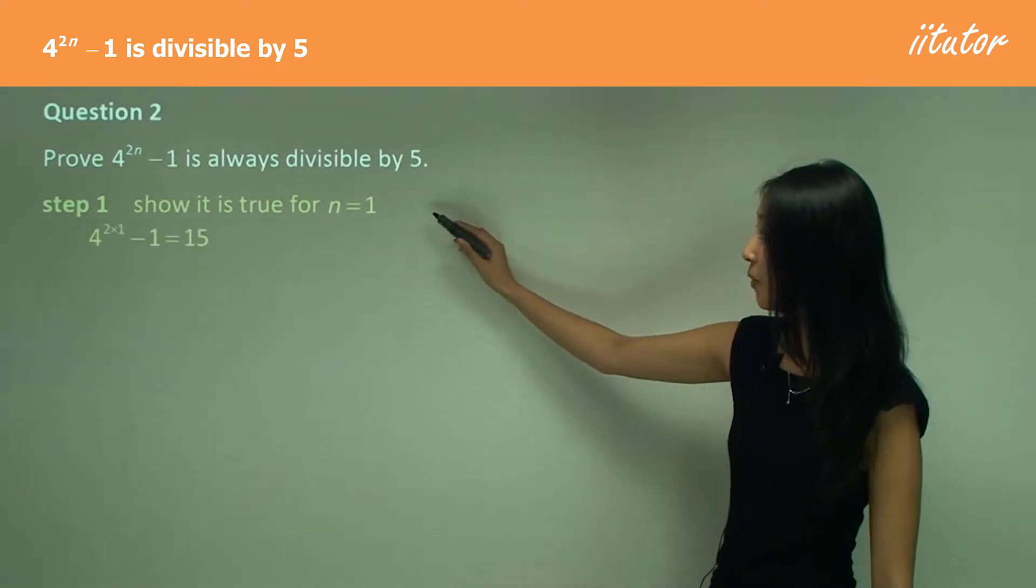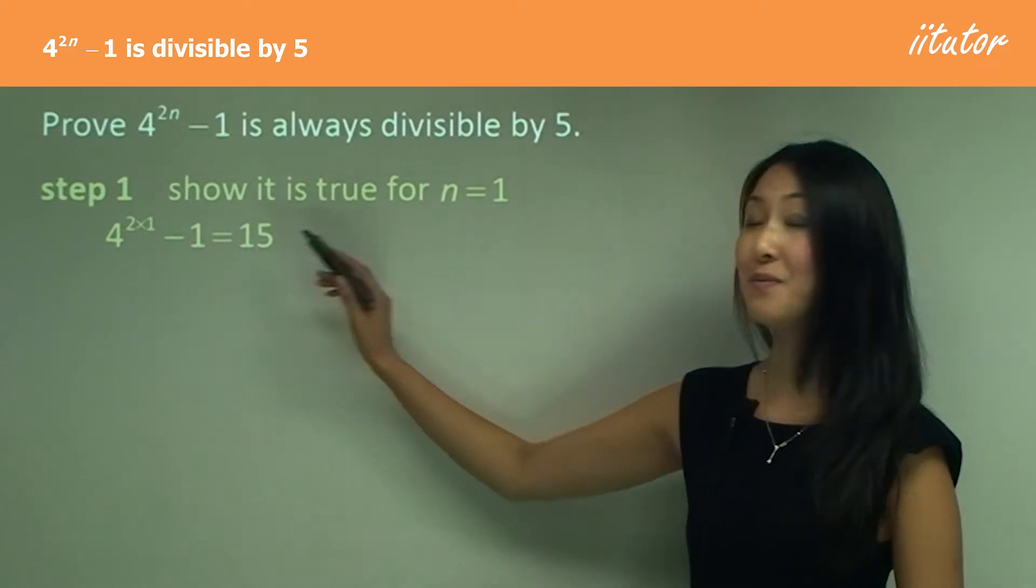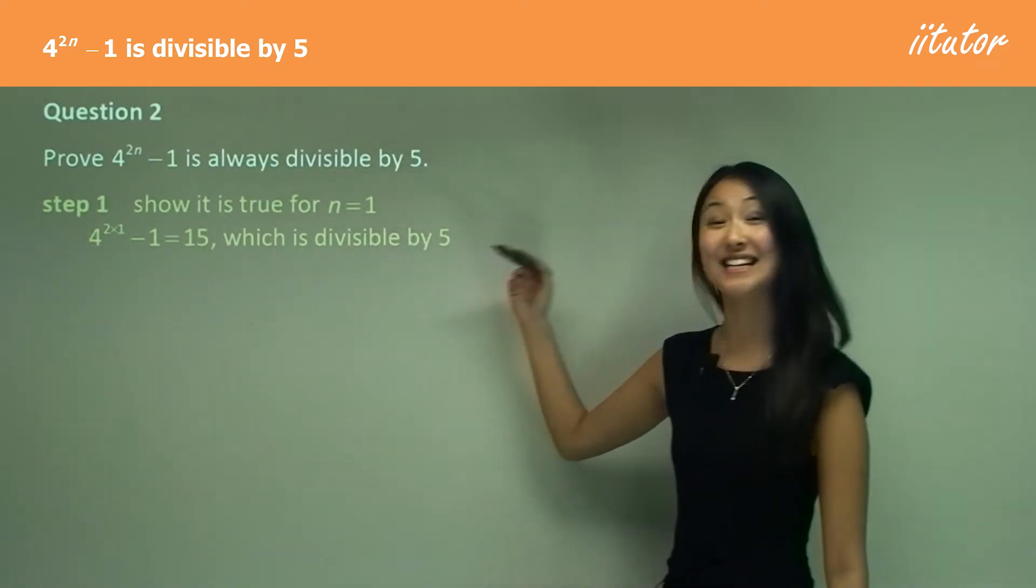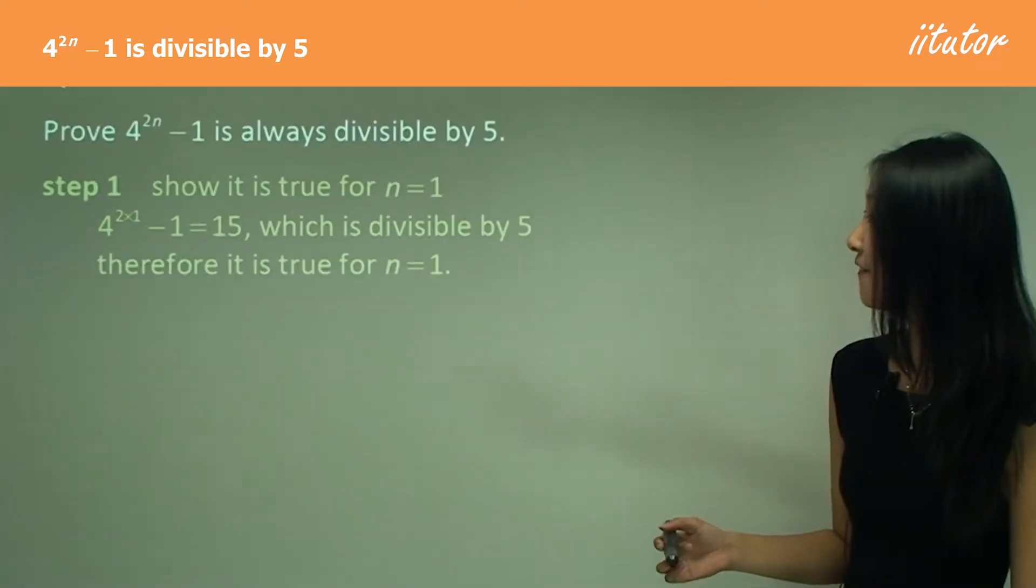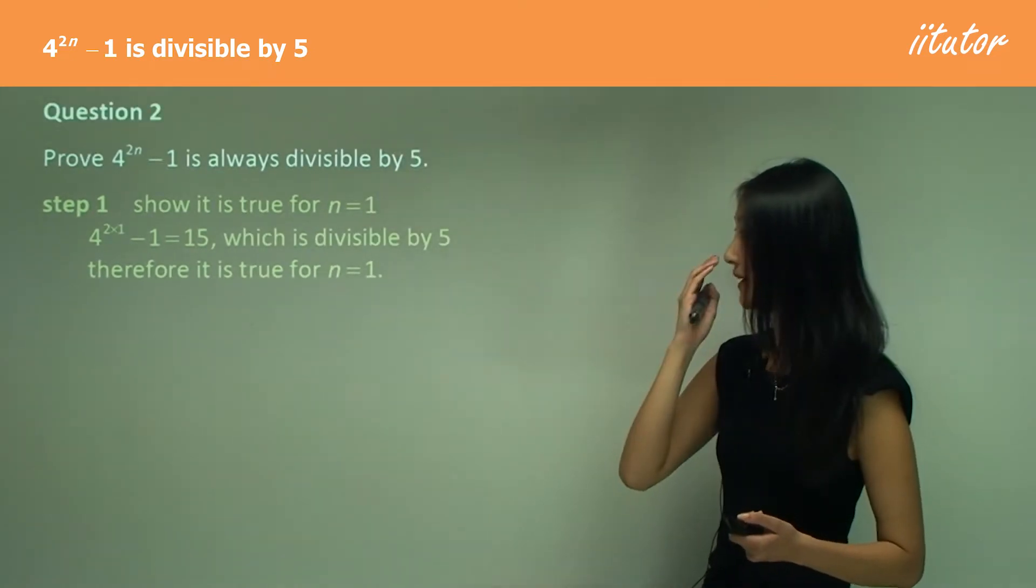Substituting in 1, I have 4 to the power of 2, which is 16 minus 1, which is 15, which is indeed divisible by 5. Therefore, this is true for n equals 1. So I've proven the first starting point.